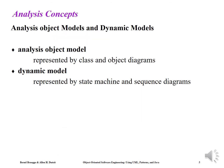The analysis object model represents the structure of the system and is depicted with UML class diagrams, including classes, attributes, and operations. The dynamic model focuses on behavior of the system and includes state diagrams and sequence diagrams. A sequence diagram represents the interaction among a set of objects during a single use case, while a state diagram represents the behavior of a single object or a group of tightly coupled objects.